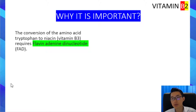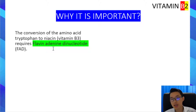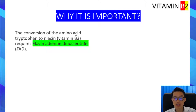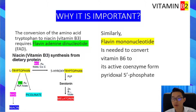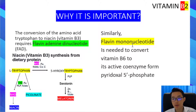The next reason why vitamin B2 is important is because its coenzyme derivative, flavin adenine dinucleotide or FAD, is needed in the conversion of the amino acid tryptophan to vitamin B3 or niacin. This diagram shows how the amino acid tryptophan is converted to niacin in the presence of FAD as a coenzyme. Similarly, flavin mononucleotide or FMN is needed to convert vitamin B6 to its active coenzyme form, pyridoxal phosphate. Vitamin B3 and vitamin B6 will be separately discussed in future presentations.